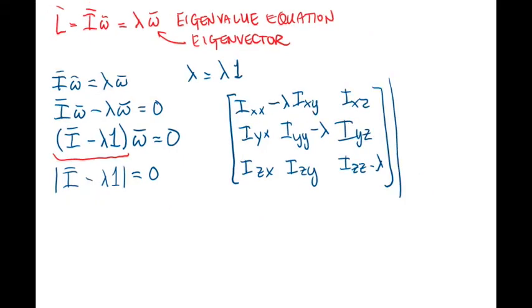We'll solve the resulting equation, determinant of the matrix equals zero, for the value of lambda. Because the matrix is three by three, we'll have three possible solutions for lambda because this equation will be cubic in lambda.